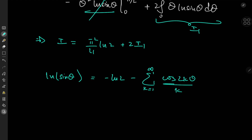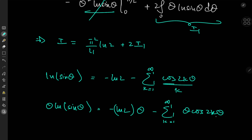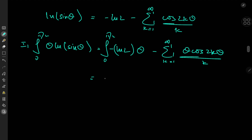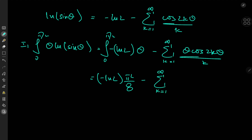To evaluate I₁, we use the series expansion for log(sin θ): log(sin θ) = −log 2 − Σ_{k=1}^∞ cos(2kθ)/k. Multiplying by θ and integrating from 0 to π/2, the first term gives −log 2 times θ²/2 evaluated at the limits, giving −π²/8 · log 2. We then switch summation and integration to get the sum of 1/k times the integral from 0 to π/2 of θ·cos(2kθ) dθ.